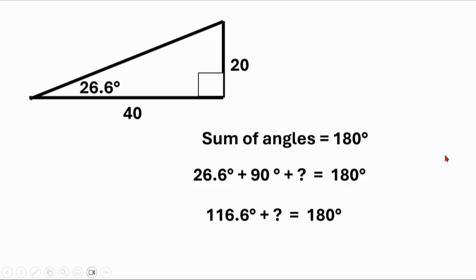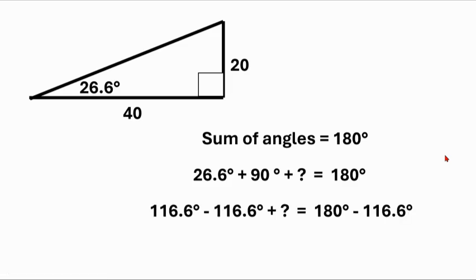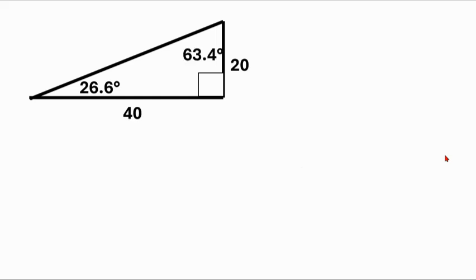And of course, you want to subtract both sides by 116.6 to get rid of that. And the right side becomes 63.4, which is our missing angle.